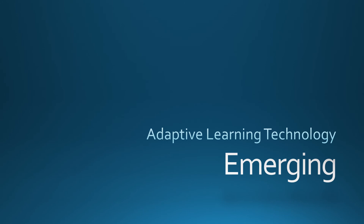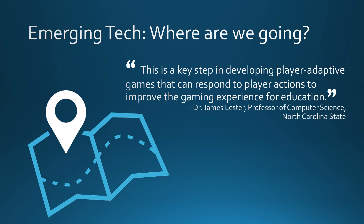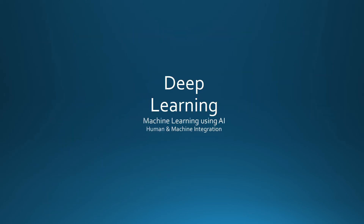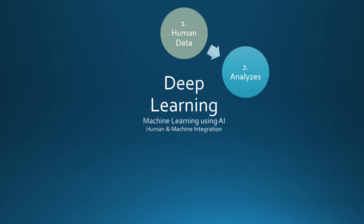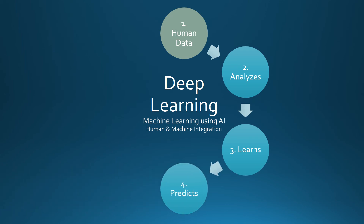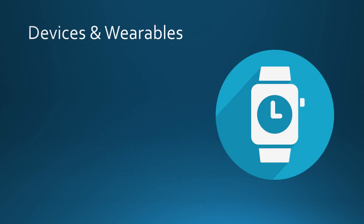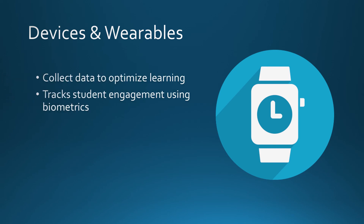Adaptive learning and related technologies continue to evolve. Deep learning is machine learning that integrates machine and human environments. Human interactions are input as data, and deep learning uses analytics to analyze that data. Artificial intelligence uses data to learn tasks without being explicitly programmed. The AI predicts learner behavior and adapts to customize the learner's pathway by creating tasks for the learner. Devices and wearables will provide more opportunity to collect data to optimize learning, sending data to teachers to track learner engagement using biometrics.